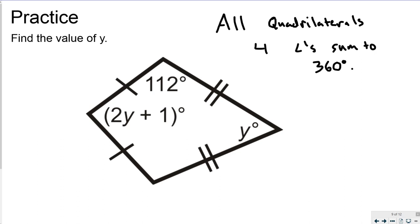So with that in mind, I can write an equation. All of these angles together, plus a missing one down here, have to sum to 360.